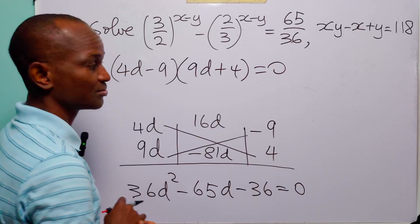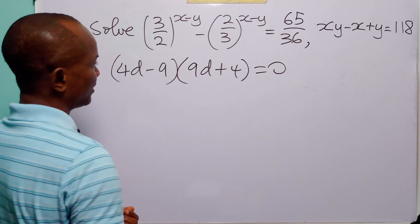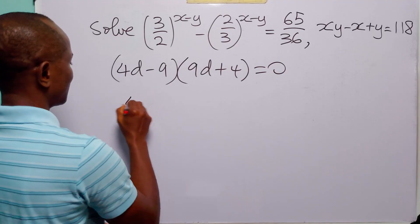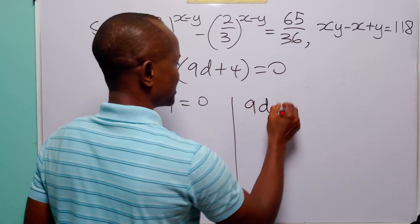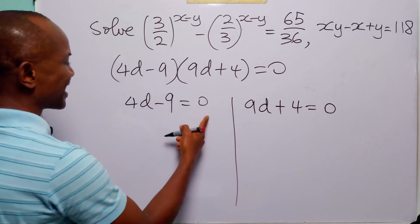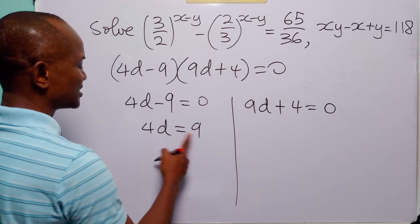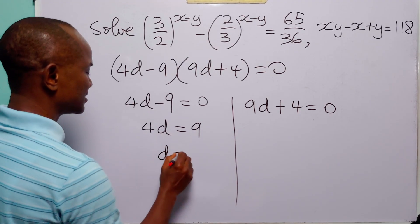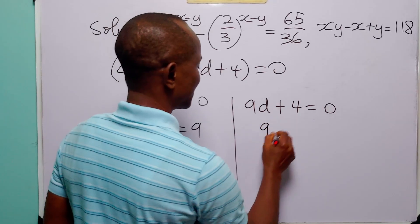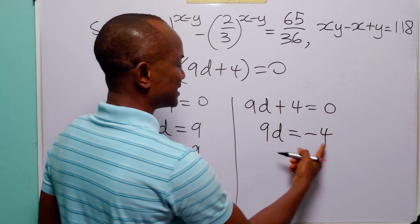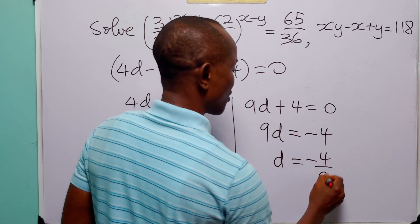This equals 0, which means that either 4d minus 9 is equal to 0 or 9d plus 4 is equal to 0. Adding 9 to both sides of the first equation, we have 4d equals 9, and dividing both sides by 4, we get d equals 9 over 4. Subtracting 4 from both sides of the second equation, we have 9d equals minus 4, and dividing by 9, d equals minus 4 over 9.